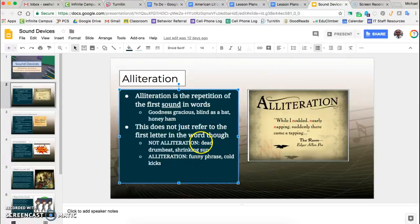So, dead drumbeat - we have d and dr which are very different. Here we have shrinking sun - sh is not the same as s. So these are not examples of alliteration because these are not actually the same sound.